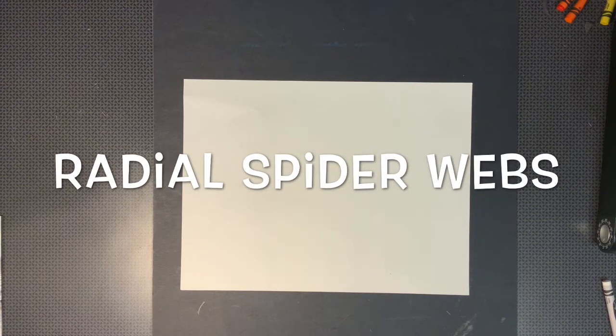Hello boys and girls. Today we are going to make a spider web and a spider for our class. We will talk about radial symmetry. Radial symmetry is symmetry around a central point.